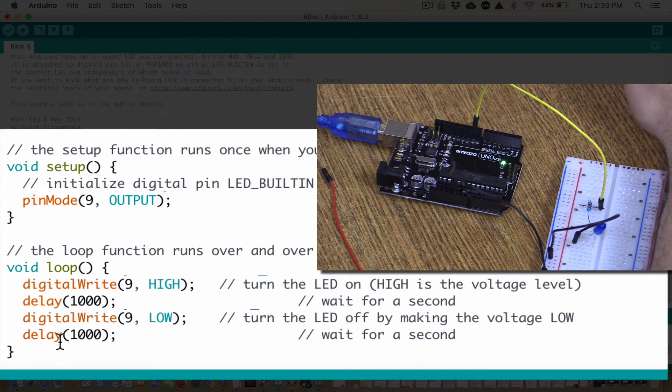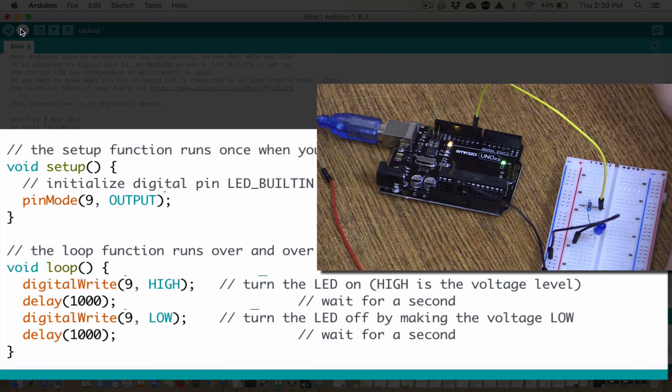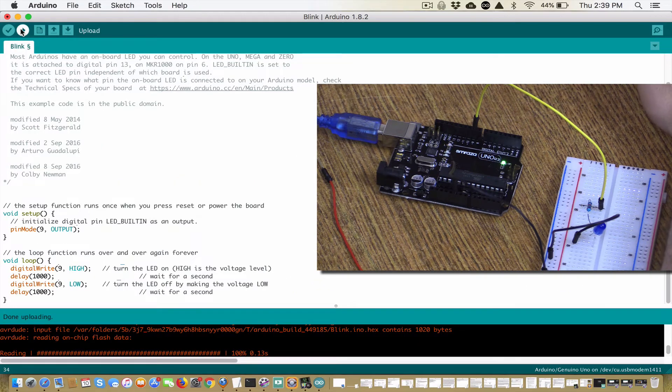digitalWrite 9 HIGH, digitalWrite 9 LOW. So if we did this right, and we hit Upload, it should upload the code to our Arduino, and everything should work just great.